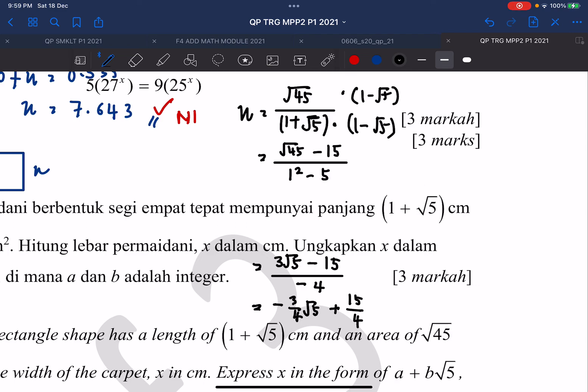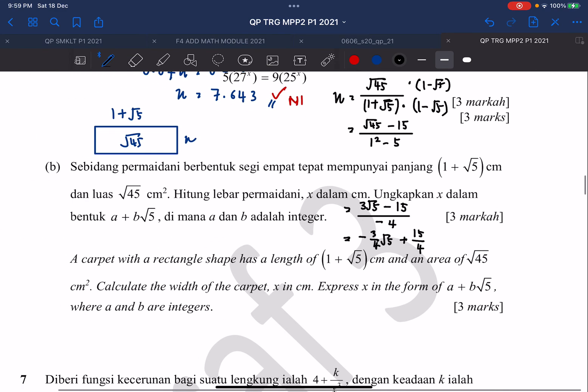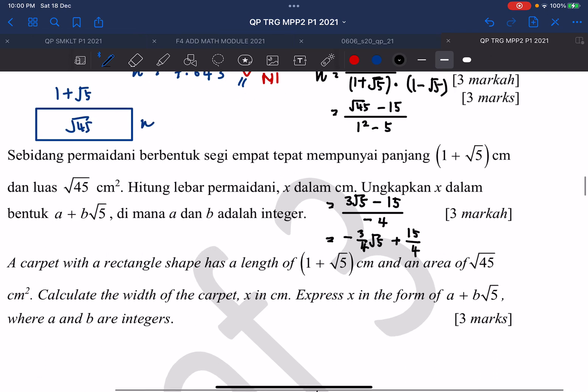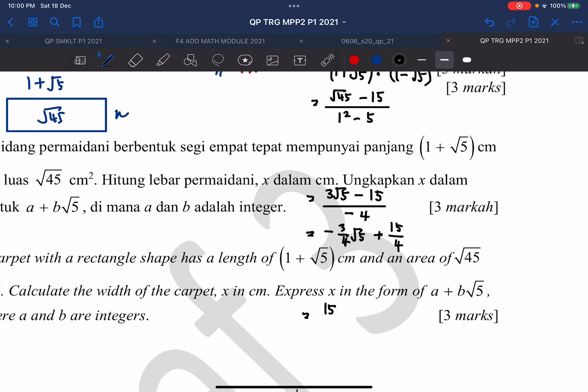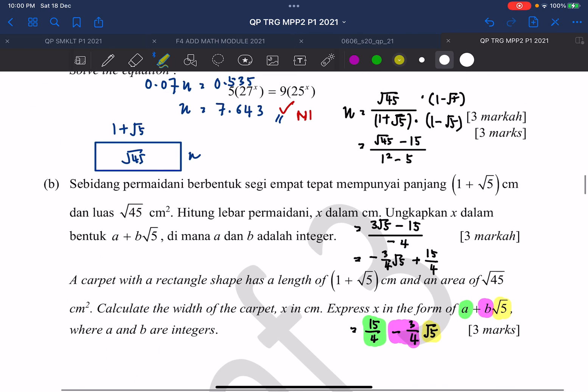Okay, so they want to express your answer in the form of A plus B root 5. So you just rearrange 15 over 4 minus 3 over 4 root 5. In this case, 15 over 4 represents your A, and negative 3 over 4 represents your B. You must express your final answer in the form requested.